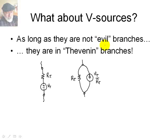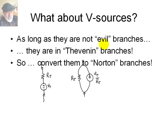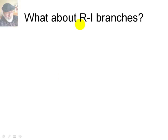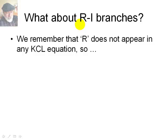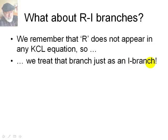What about if we have an R-I branch? A branch that has only one resistor apart from a current source. We remember from EC 251 that that resistance does not appear in any KCL equation. That resistor is doing nothing in the equation. So we treat that branch just as an I branch. We ignore it. So if we have a branch like this one, a current source in series with a resistor, we treat that as if it was only the current source for purposes of writing the equations. Later on, we may need the power in that resistance or something like that. But to solve this circuit, we treat that branch like this.